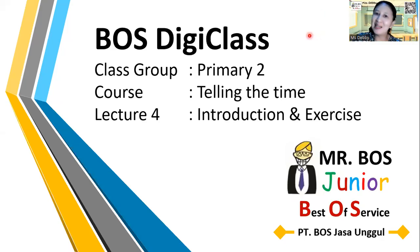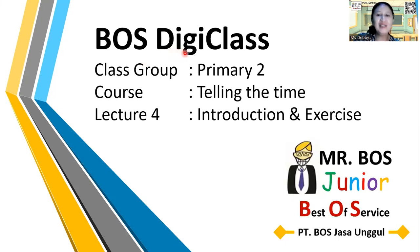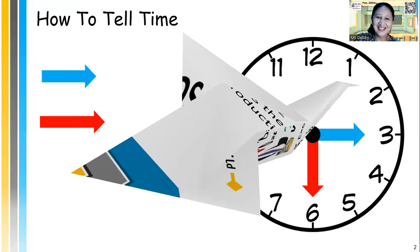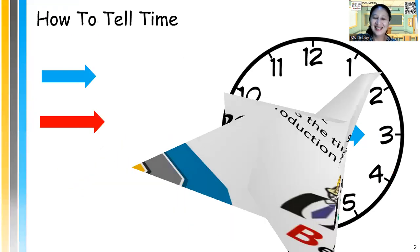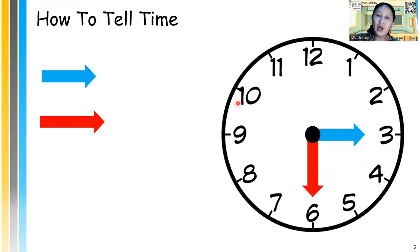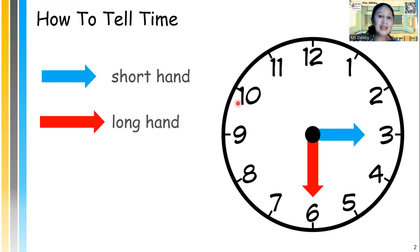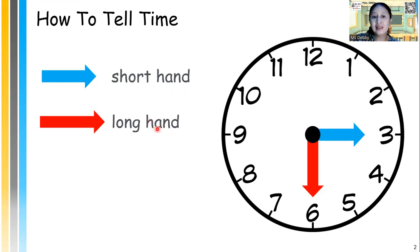Hello everybody, welcome back to Bose DigiClass, best of service. Today we are going to learn about telling the time. On the clock, there are always two hands: the short hand and the long hand. The short hand tells you about the hour time, and the long hand tells you about the minute's time.